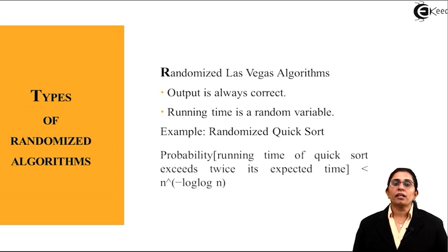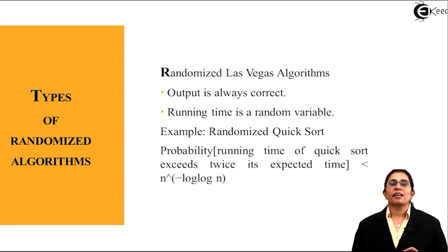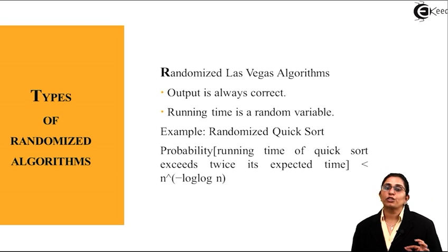The probability or the running time for the quicksort exceeds twice the expected time and it is less than n raised to the power of minus log log n. So we see how much it is reduced.